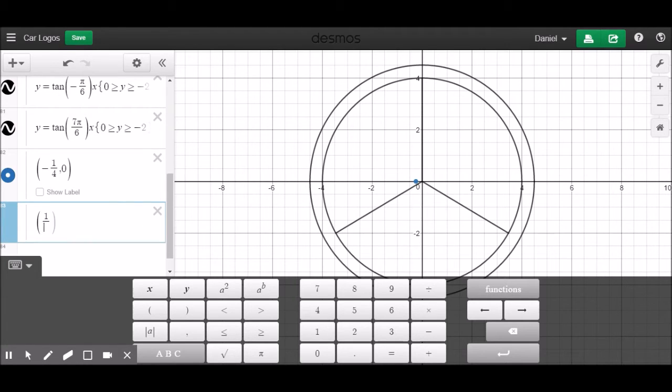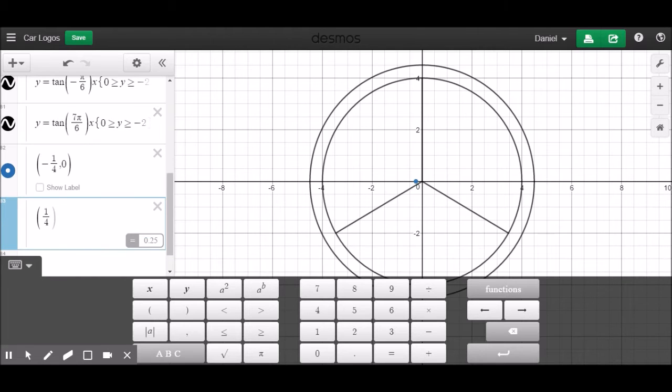Over here they do something very similar. We know the line over here, the point over here is x = 0 and y = 4. So all we need to do is find a line that goes through these two points.